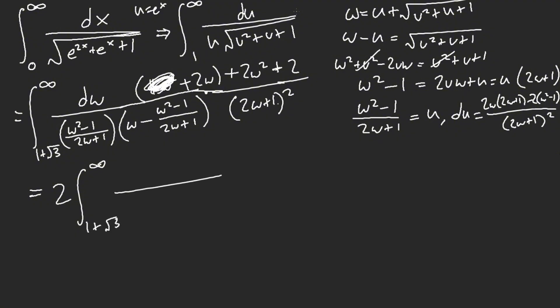Alright, that 2w plus 1 square is going to cancel this out. So, we get w square minus 1. And then this is what? W times 2w. 2w square plus w minus w square minus 1. Oh, sorry, plus 1 because of that negative.